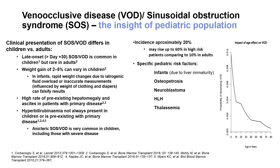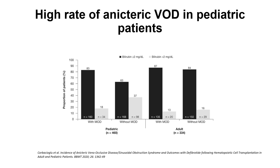You can see here clearly on this graph the impact of age on the occurrence of VOD: infants develop VOD more frequently, mostly due to liver immaturity. Furthermore, specific diagnoses like osteopetrosis, HLH, neuroblastoma, and thalassemia make those patients susceptible to VOD. In a recent paper by Professor Czorbaciolu and colleagues, a high rate of anicteric VOD in pediatric patients was shown clearly: 37% of patients without multi-organ failure had anicteric VOD at diagnosis, and even among patients with multi-organ failure, 18% had bilirubin below 2 mg/dL at diagnosis.